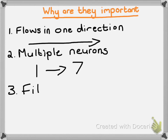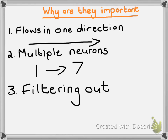The third and final reason why synapses are so important is something called filtering out. Filtering out means that your body and your nervous system have the ability to decide which impulses actually matter and which ones should be ignored. For example, right now you're probably sitting down and stimulating pain receptors in the tissue you're sitting on, but your body chooses to ignore that information because it knows you are under no duress and are perfectly fine. Only after a while, if you've lost blood circulation, do you start to experience something like pins and needles.